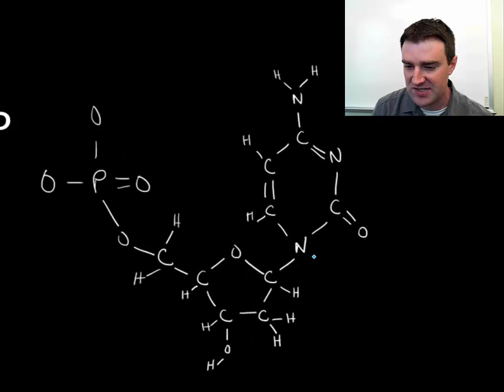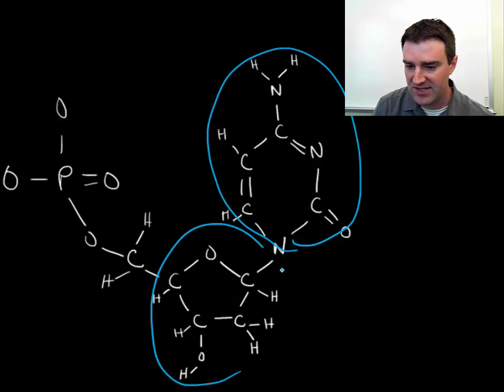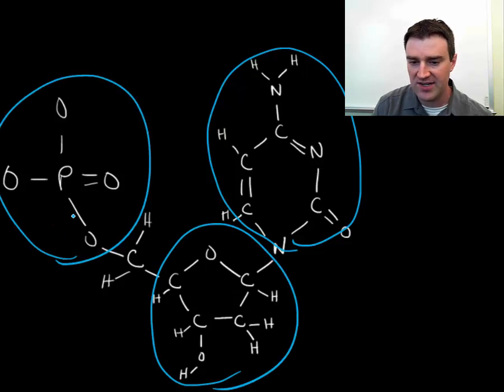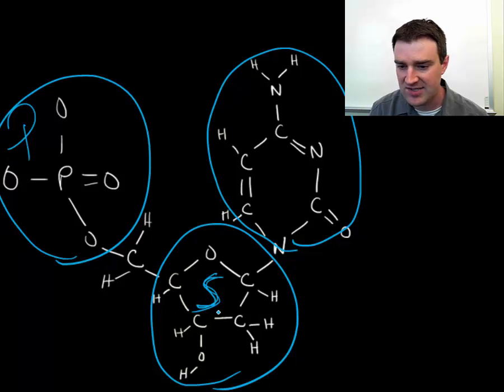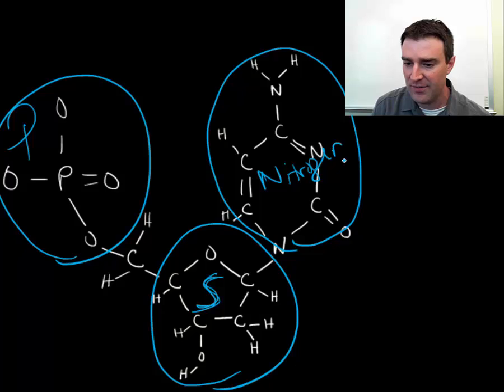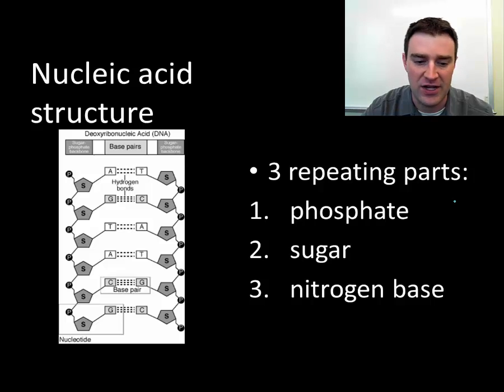We're going to see a much simpler model of nucleic acids that basically breaks up this guy into three constituent parts. We're going to represent a phosphate group, a sugar (maybe you remember me saying that sugars could be pentagons or hexagons), and the nitrogen base, which is going to be very important to how nucleic acids function.